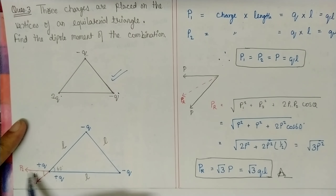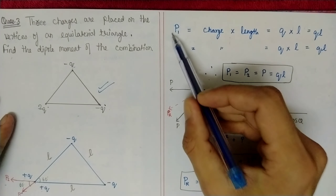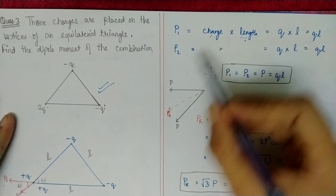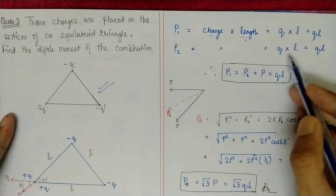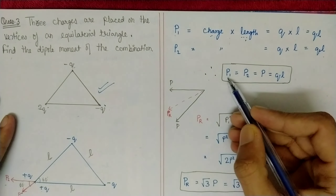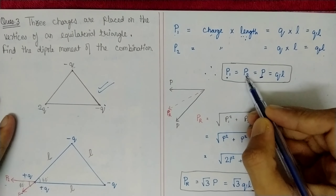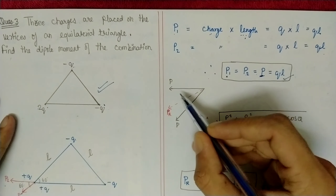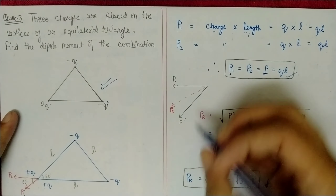Since this is an equilateral triangle, all angles are 60°. The magnitude of each dipole moment is p = q × L, where L is the side length. So p₁ = p₂ = qL. Now we need the resultant of p₁ and p₂, which makes a 60° angle between them. We apply the parallelogram law of vector addition.